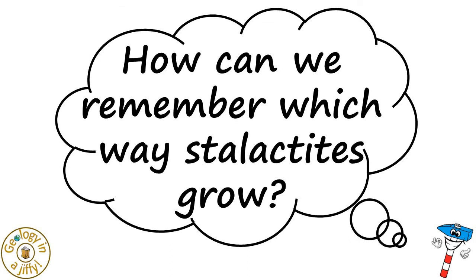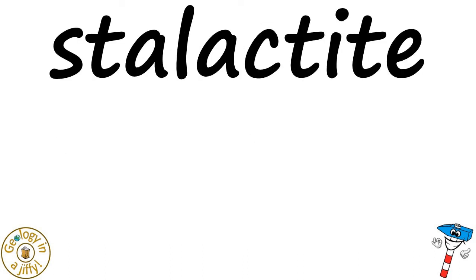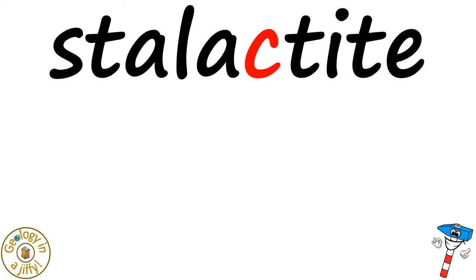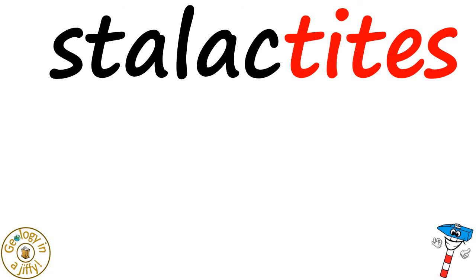How can we remember which way stalactites grow? Look at the word stalactite. The word ceiling has a C in it. So does the word stalactite. So that helps remind us that stalactites grow from the ceiling. The word stalactites has the word tights in it. Remember that tights are clothes that hang downwards. So that also helps us remember that stalactites grow downwards from the ceiling.